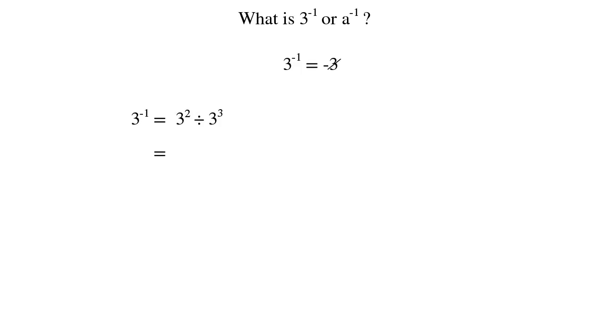We can write 3 squared divided by 3 cubed as 3 times 3 over 3 times 3 times 3. And we can cancel these down to give us the answer 1 over 3. So 3 to the power negative 1 can be written as 1 over 3.